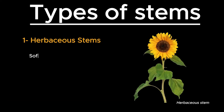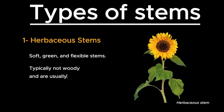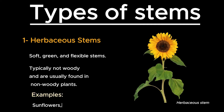Herbaceous stems are soft, green, and flexible stems. Typically they are not woody and are usually found in non-woody plants. Herbaceous stems are found in sunflowers, beans, and many annual plants.